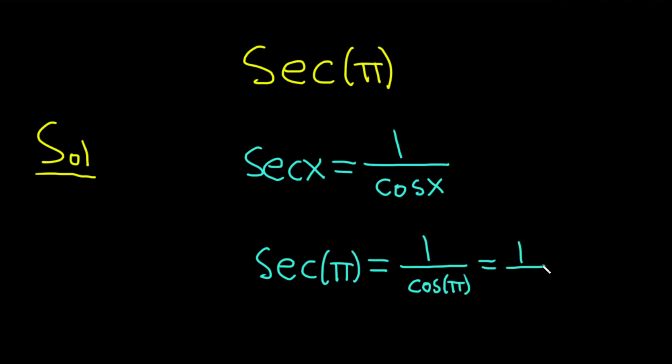That's equal to 1 over, and the cosine of pi is negative 1, so we have 1 over negative 1, so we get negative 1. So the secant of pi is equal to negative 1, and that would be the answer.